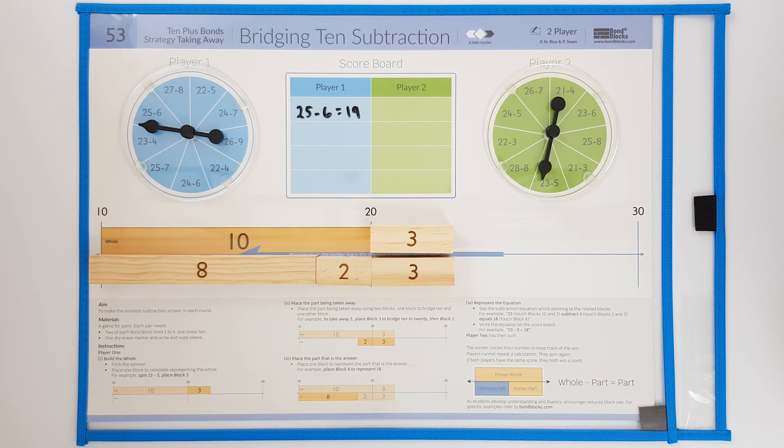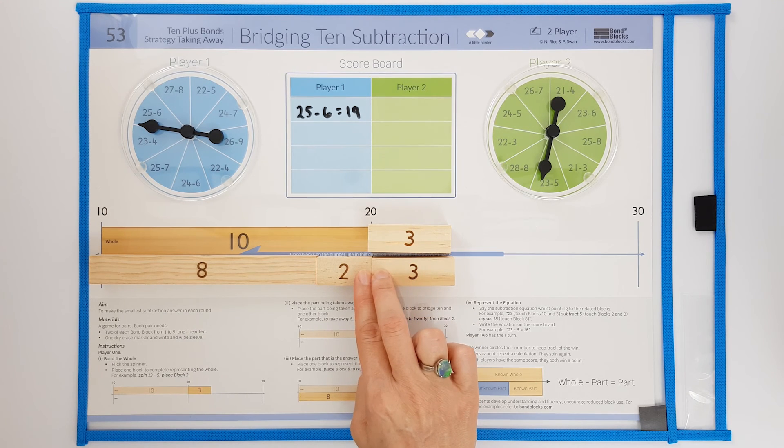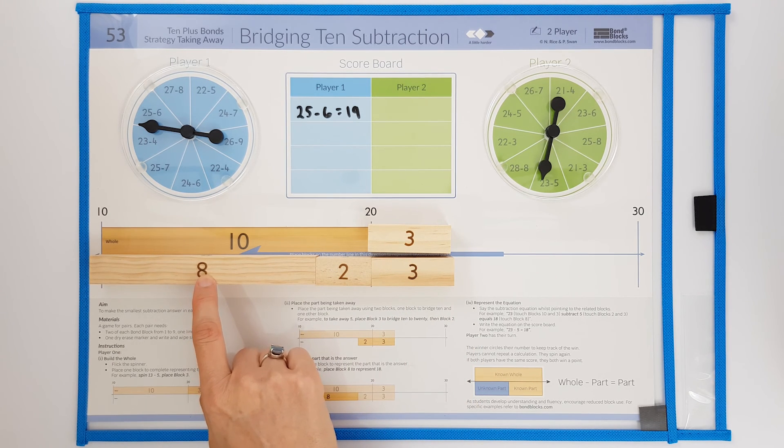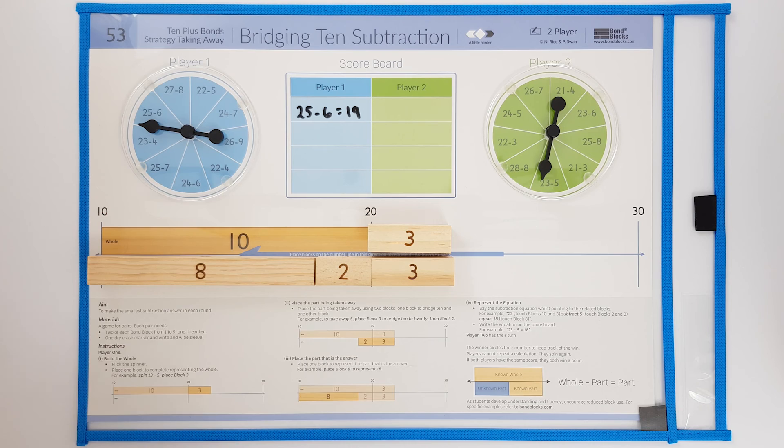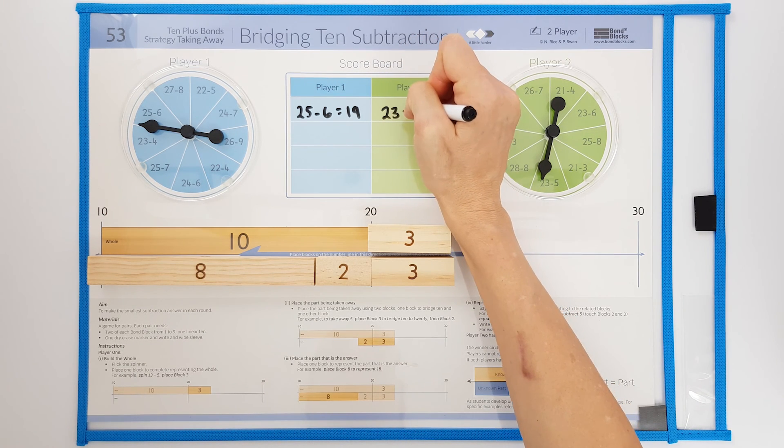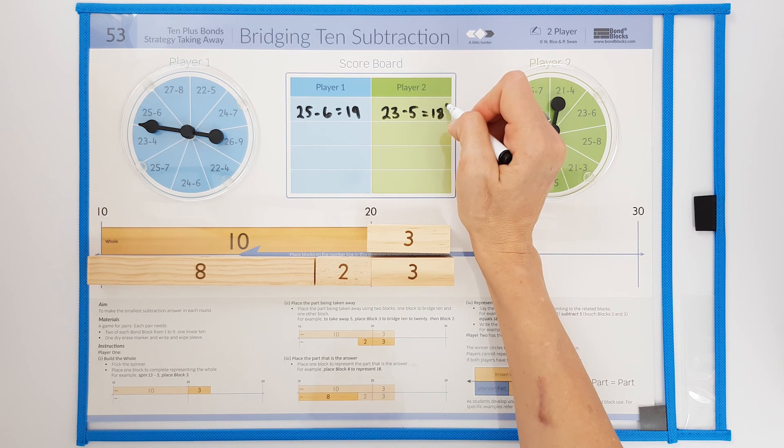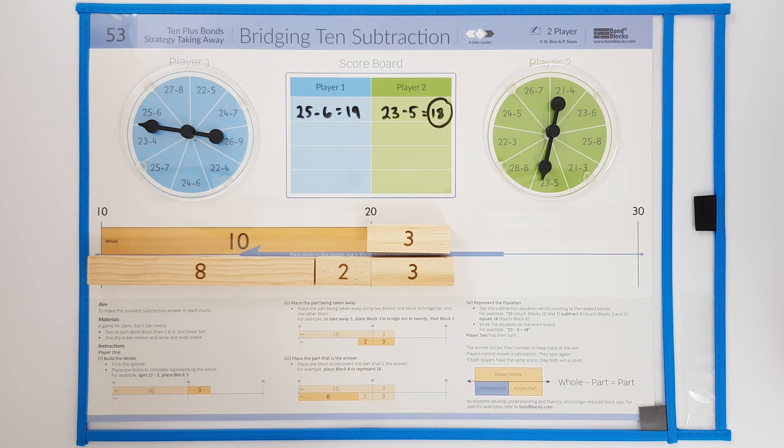And they say 23 subtract 5 equals 18. Player 2 is the winner for this round because they made the smallest or least answer to the subtraction.